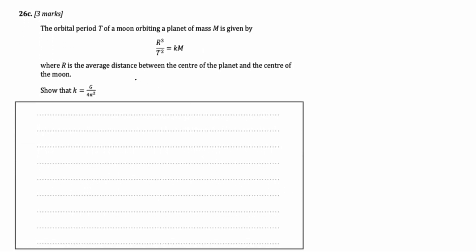Question 3. The orbital period t of a moon orbiting a planet of mass m is given by r cubed over t square is equal to km, where r is the average distance between the center of the planet and the center of the moon. Show that k is equal to g over 4pi square. Now, in a previous video, I derived Kepler's third law.